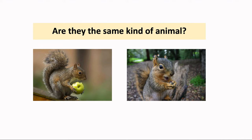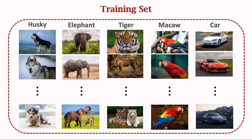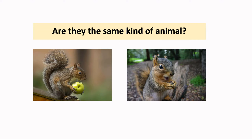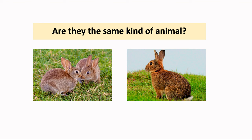So the model is able to tell that the content in two images are the same kind of objects. The training data has five classes which do not include the squirrel class, so the model is unable to recognize squirrels. If you show an image of a squirrel to the model, the model does not know it is a squirrel. When the model sees two squirrel images, it does not know they are squirrels. However, the model knows they look alike and can tell you with high confidence that they are the same kind of objects. Similarly, the model has never seen a rabbit during training, but it knows the similarity and difference between things and can tell that two rabbit images are very alike.